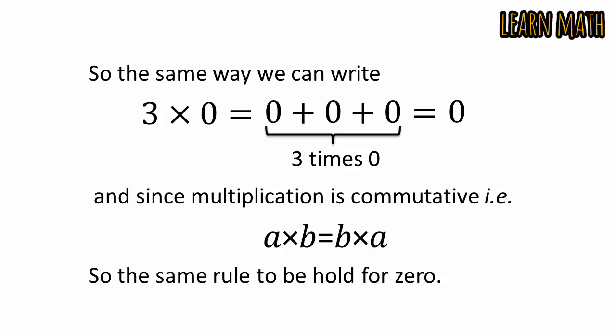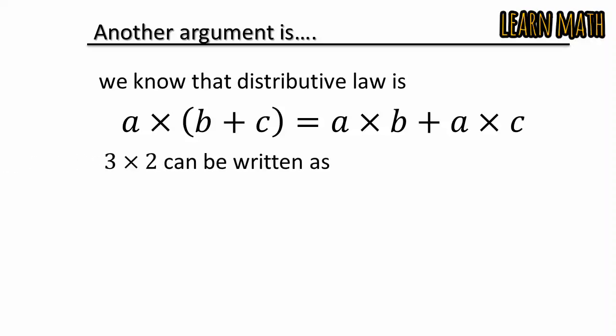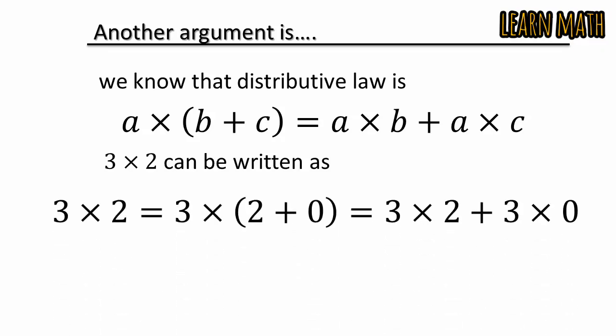The second argument is: we know that the distributive law is a × (b + c) = a × b + a × c. Now, 3 × 2 can be written as 3 × 2 = 3 × (2 + 0).